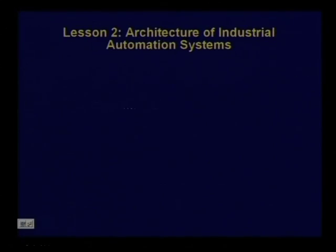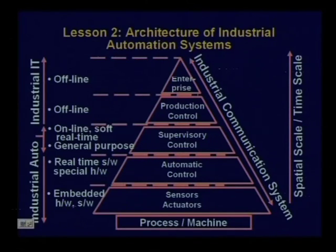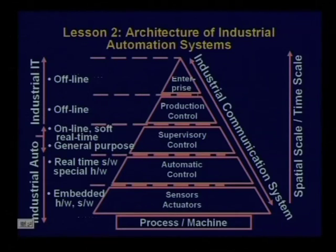In the next lesson we took a look at the architecture of industrial automation systems and introduced the automation pyramid and the levels of automation. We talked about level 0 of sensors and actuators, then level 1 of automatic control, various protections and alarms, then supervisory control, process monitoring, set point optimization, then production control, scheduling, maintenance, management, and inventory.